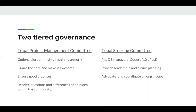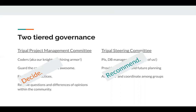We then moved on to a second tier of governance, which is the steering committee. This is principal investigators, database managers, and also some coders — the people who really want to think about leading TRIPLE into the future. What are new data types we need to be considering? How do we advocate for funding across the entire group? How do we coordinate among groups? This two-tiered governance structure has worked well for us, and one of the core tenets we all felt was important was that the TRIPLE steering committee really only makes recommendations. The project management committee actually has the deciding power, and we feel that's in the best long-term interest of TRIPLE to make sure that the people who are actually architecting the software and writing the code have the final say in how it looks downstream.